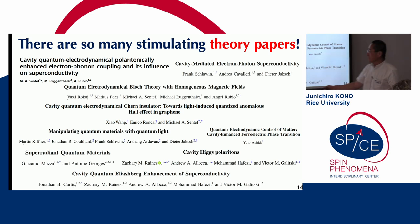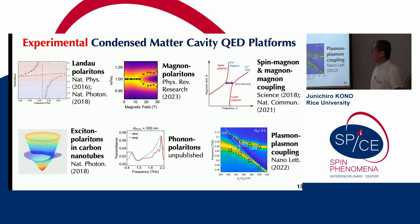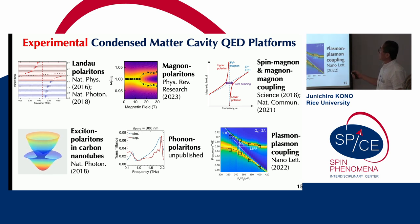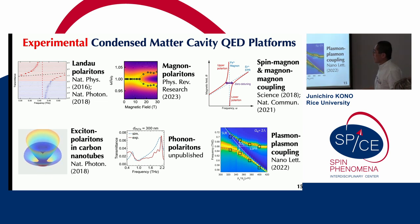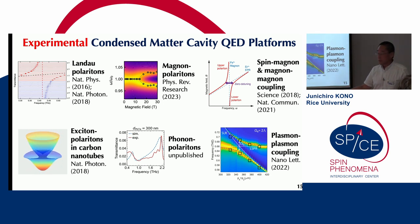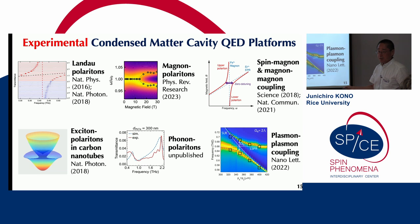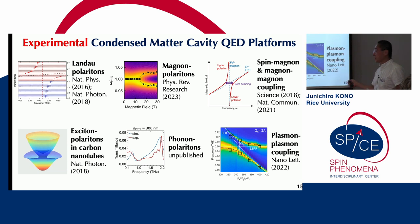There are many interesting ideas in the recent literature — all theoretical papers stimulating and encouraging experimentalists to explore strong coupling physics in cavities in condensed matter systems. Within my group, we've been using different types of condensed matter cavity QED platforms, including Landau polaritons, exciton polaritons, magnon polaritons, and phonon polaritons. We also have some exotic systems without light, such as spin-magnon ultra-strong coupling, magnon-magnon coupling, and plasmon-plasmon coupling systems.